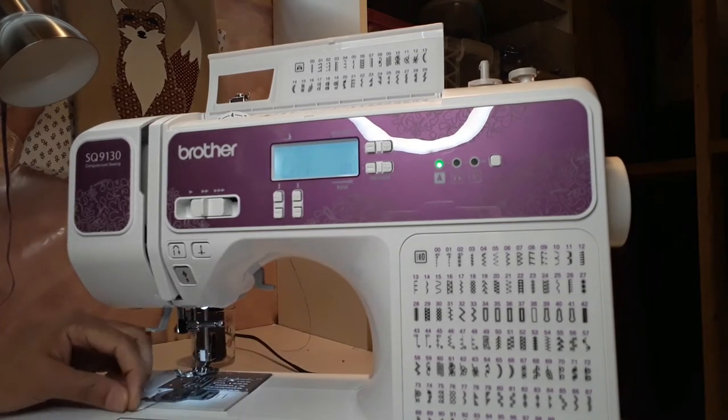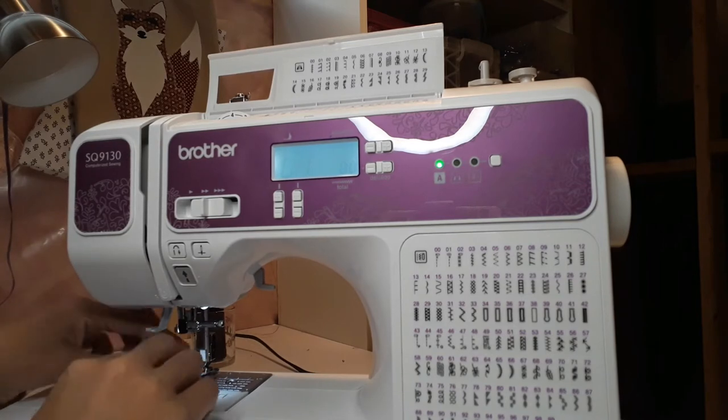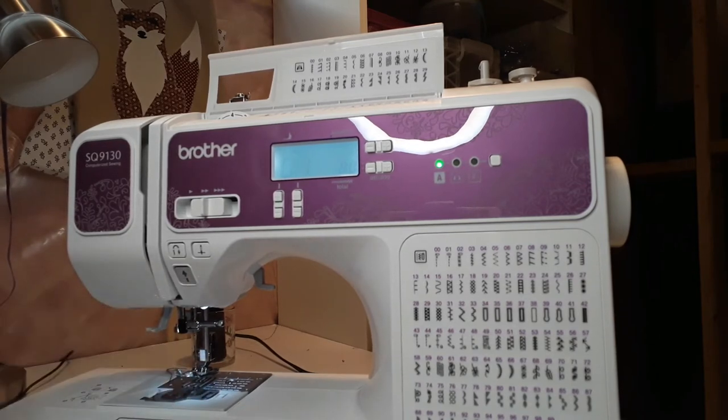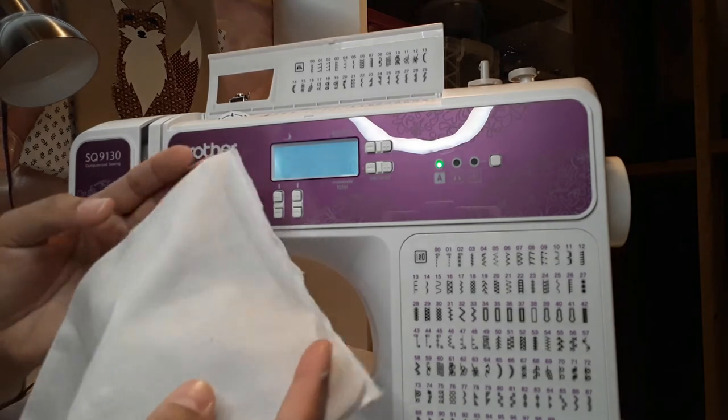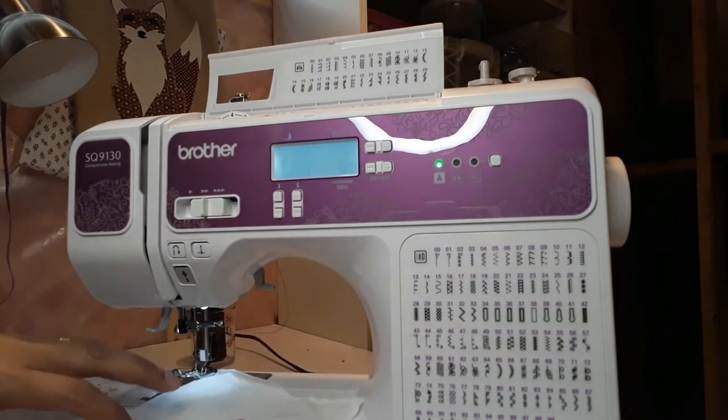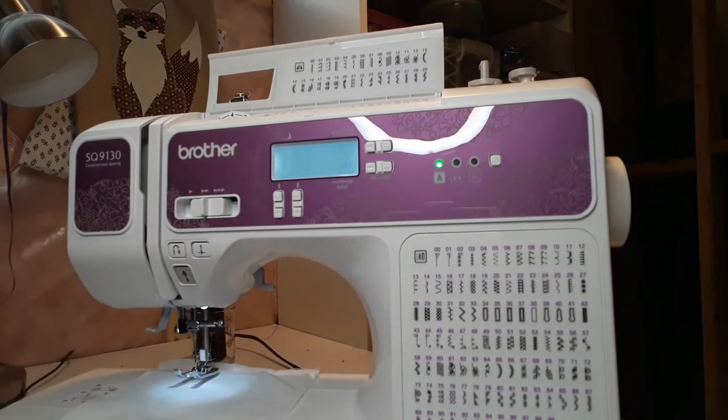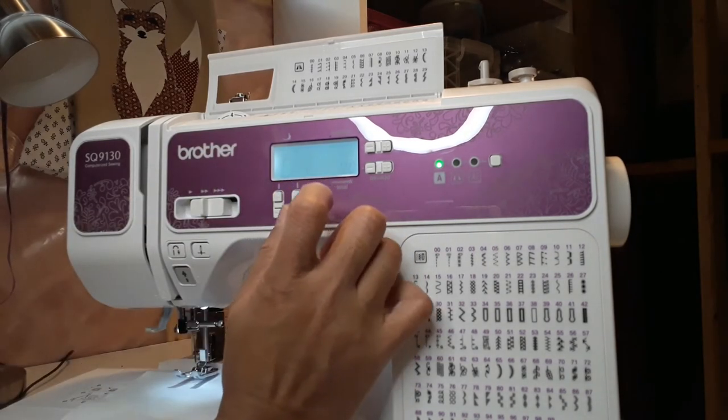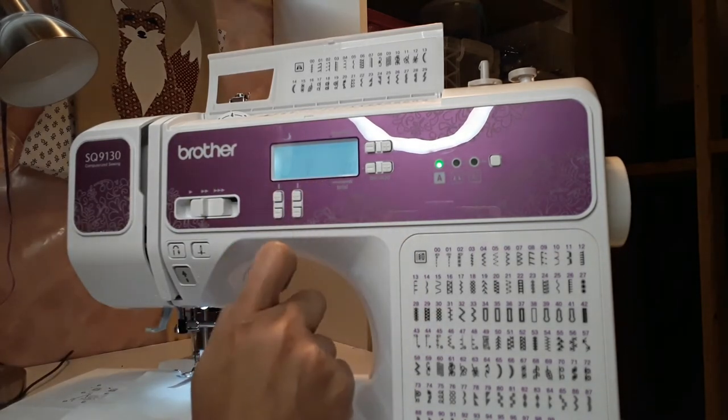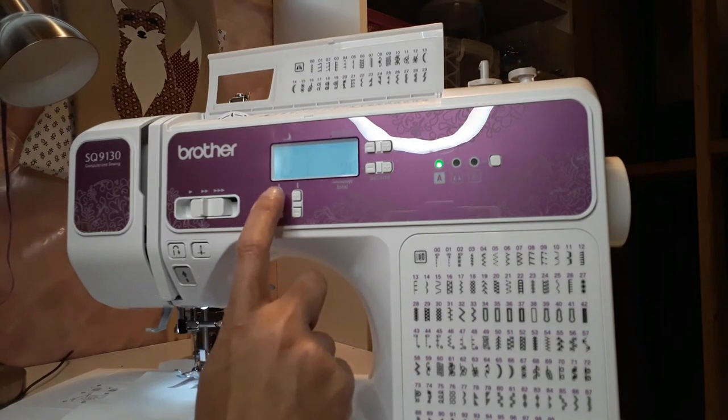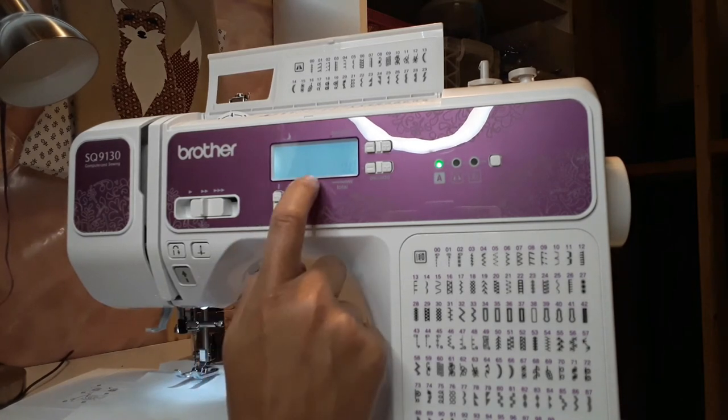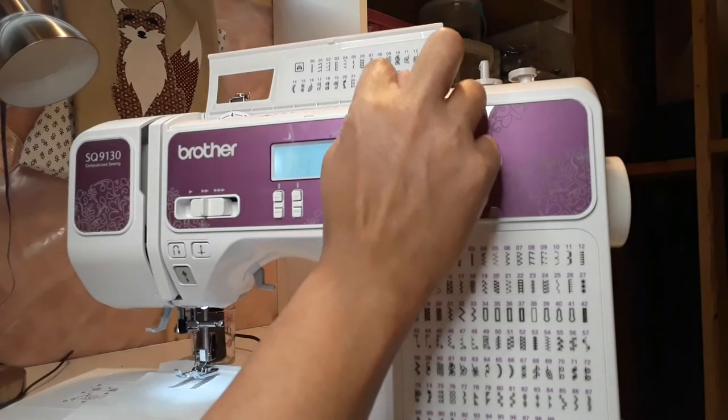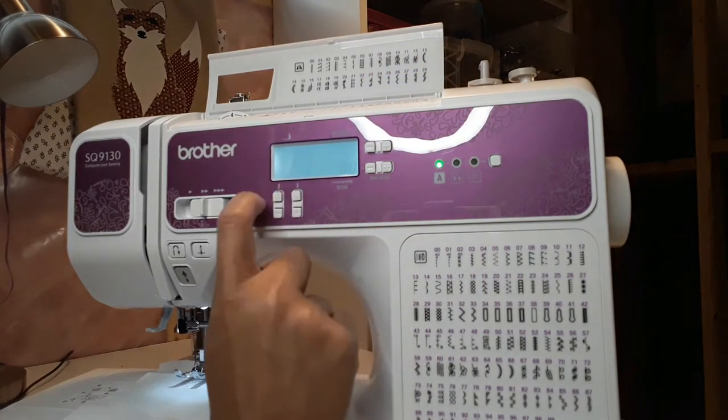Now I put my thread to be black just for you guys to see. I'm going to use a white fabric so you can see what I'm doing. Basically, in order to write, let's say I want to write my name, so my name starts with M. My name is Mary.